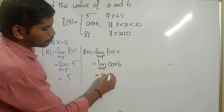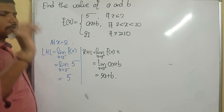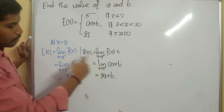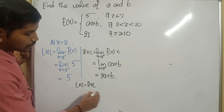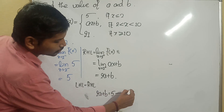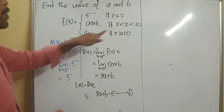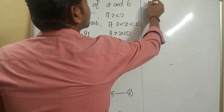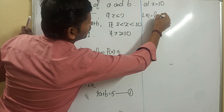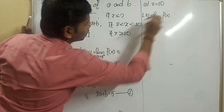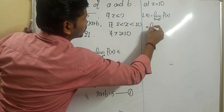Since the function is continuous, LHL must equal RHL, giving 2a + b = 5. Call this equation number 1. Now I need to check at x = 10. At x = 10, LHL: limit as x tends to 10 minus — less than 10, so I select the second function, ax + b.